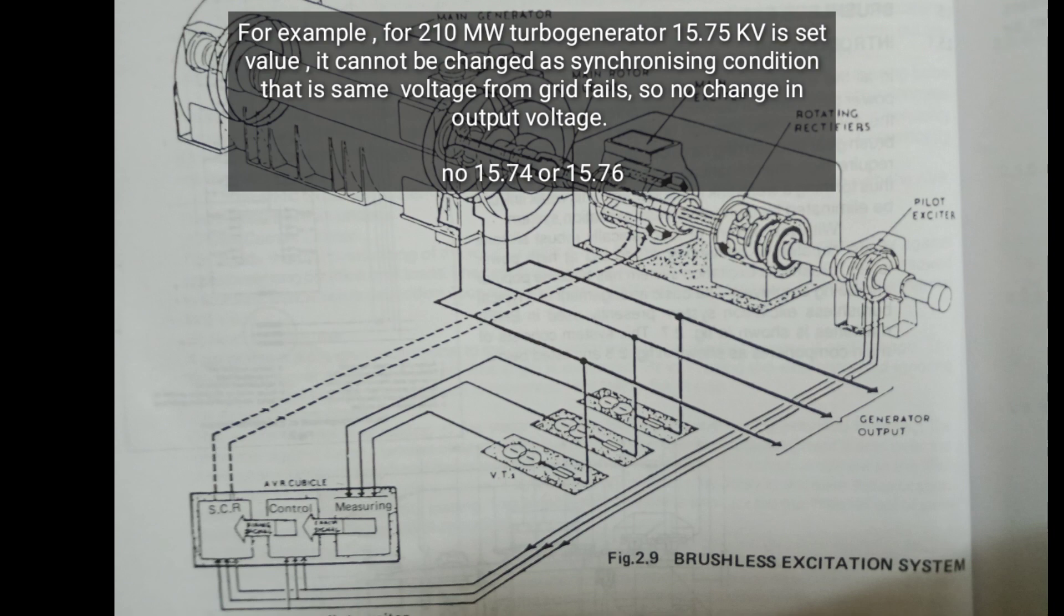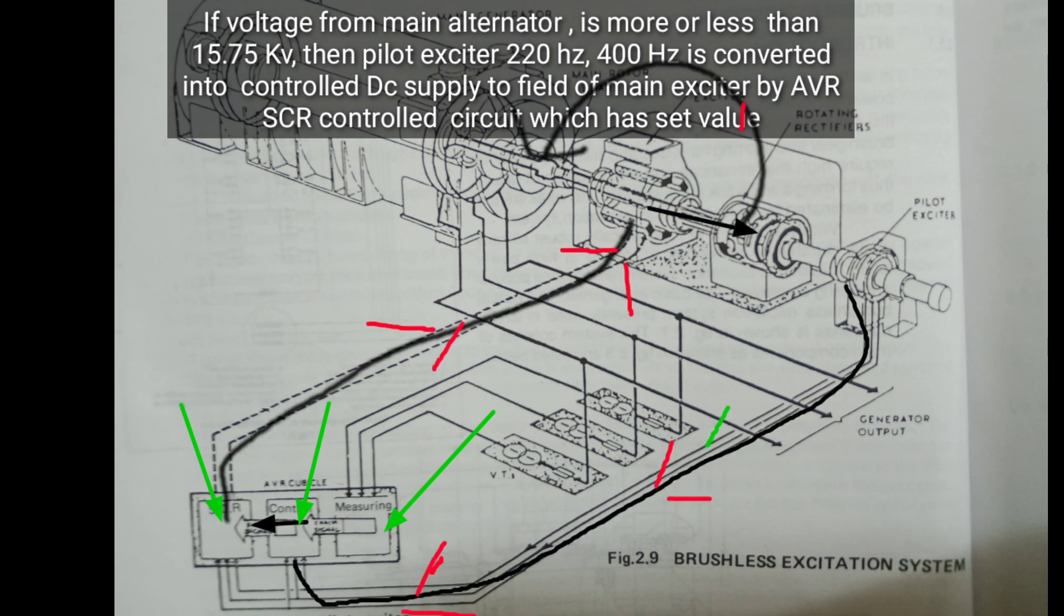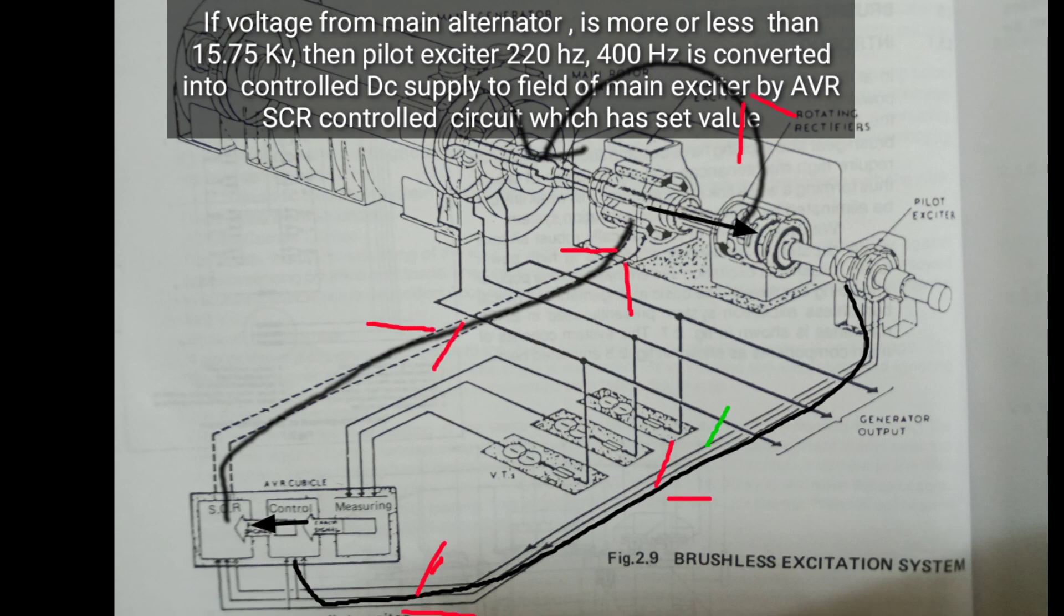That is the same voltage from the grid. If voltage from main alternator is more or less than 15.75 kV, then pilot exciter 220V plus/minus 20V, 400 Hertz, is converted into controlled DC supply to field of main exciter by AVR SCR control circuit which has set value.